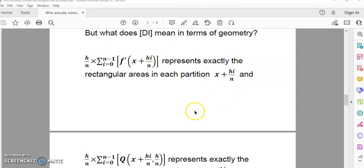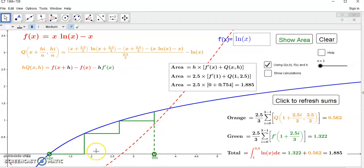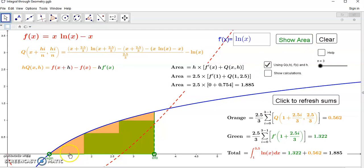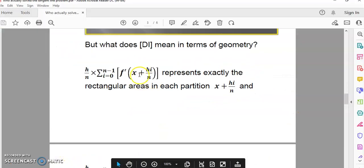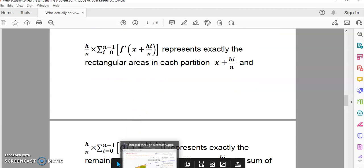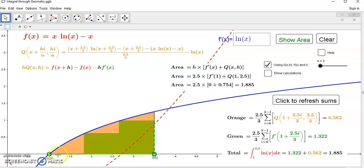But what does DI mean in terms of geometry? So, this part represents exactly the rectangular areas in each partition x plus h i. If we go to the applet and we show the areas, this part here, f prime of x plus h i over n, is the rectangular areas. Now, in this case here, there is no rectangular area in the first one because we're using the log of 1, which is 0. So, that's expected, but you can calculate this and you can see that it works, and you'll see also that when you sum up the green areas and orange areas, the total sum will be 1.885, which is the total area under the curve.